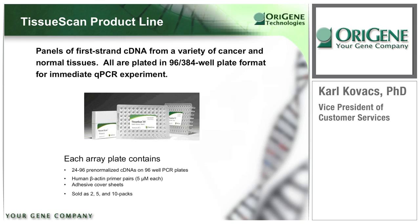What are these TissueScan products? They are panels of first-strand cDNA prepared from a variety of highly qualified cancer tissues and plated in 96 or 384 well format for immediate qPCR experiments. Each TissueScan product contains 24 to 96 actin-normalized cDNA from cancer and normal tissues. A pair of primers for human beta-actin and adhesive qPCR plate cover sheets are also included.